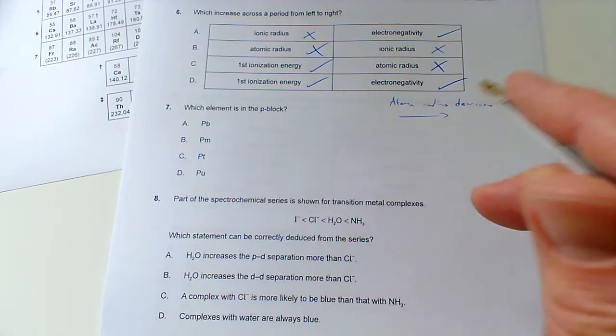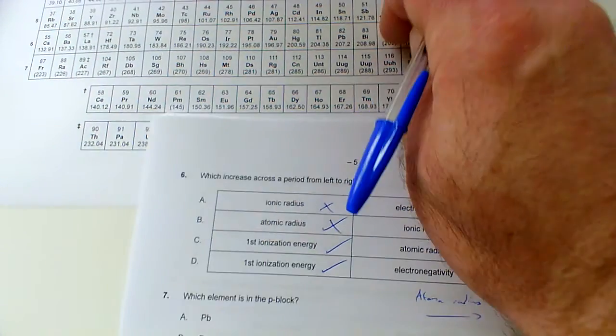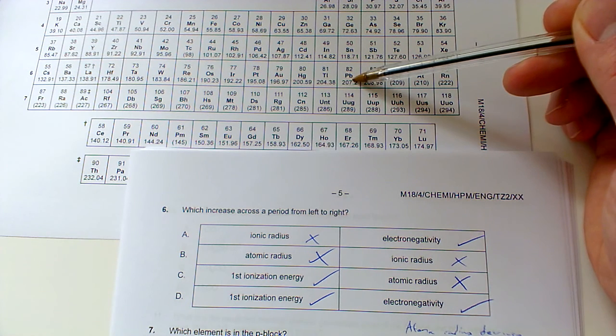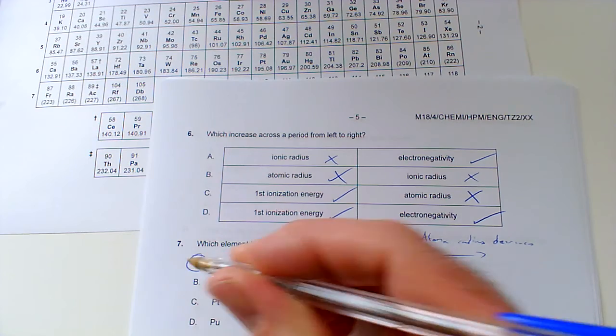Which element is in the P-block? Well here's our periodic table comes in handy. So this is the P-block around about here, so we can see that lead is in the P-block there. So our answer is lead.